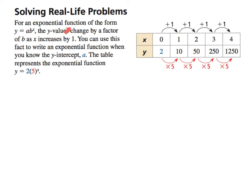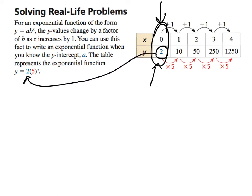Solving real-life problems. For an exponential function of this form, the y-values change by a factor of b as x increases by 1. You can use this fact to write an exponential function when you know the y-intercept. The table represents the exponential function: if you start at 2, that's your a value. The factor you multiply by each time is what b is.